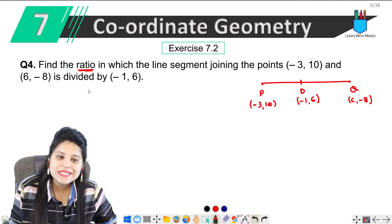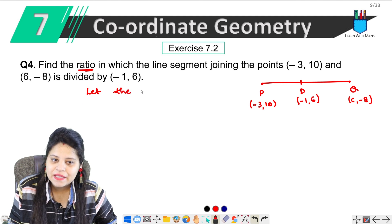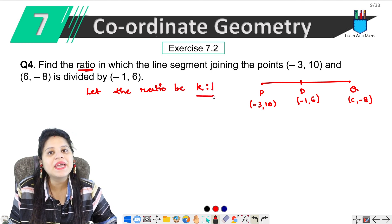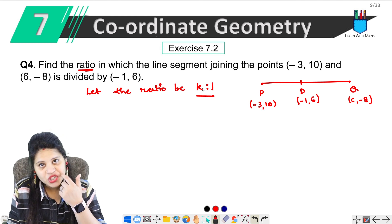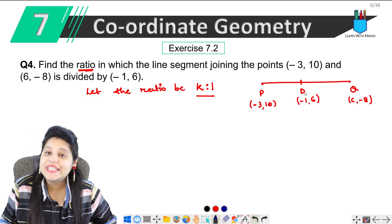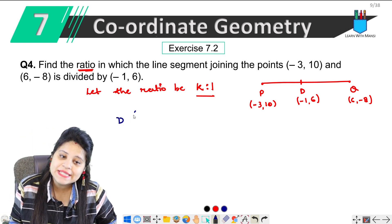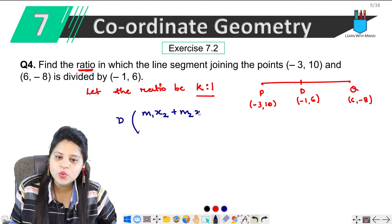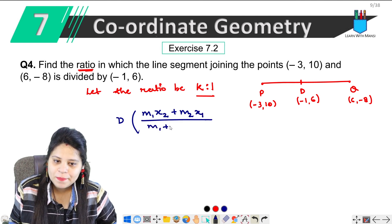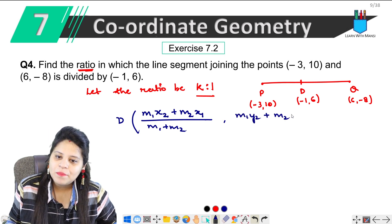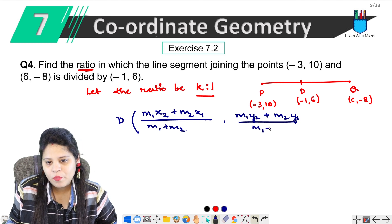When you have to find the ratio, simply we let D divide PQ in ratio K:1. We have written it as K is to 1. Now what we will do — we will apply the section formula here. The section formula gives D's coordinates as: (M1·X2 + M2·X1) / (M1 + M2) and (M1·Y2 + M2·Y1) / (M1 + M2).